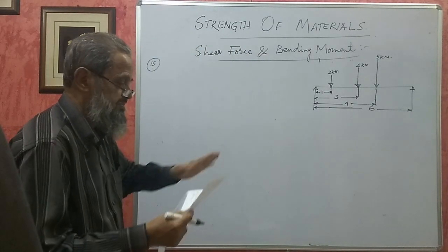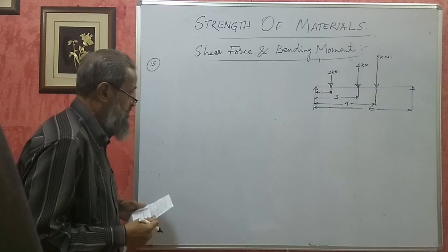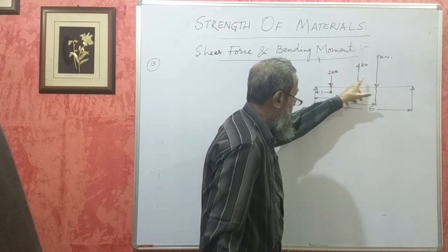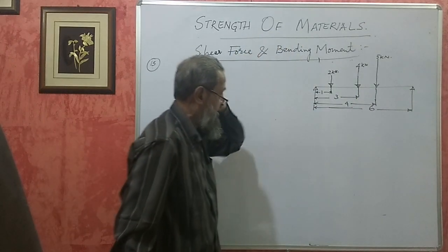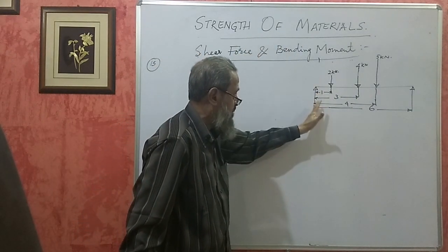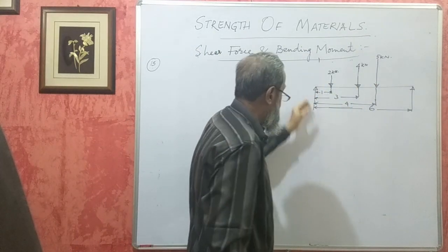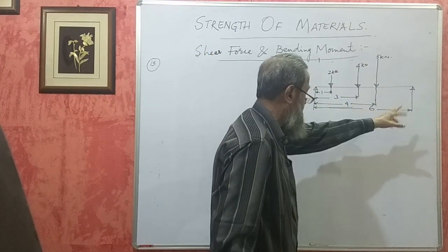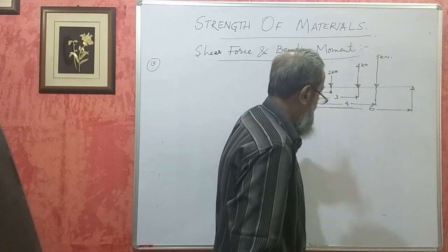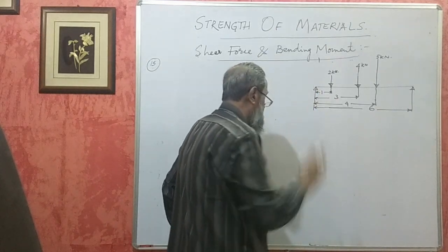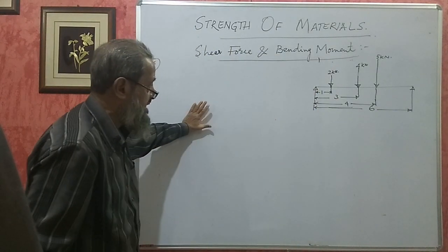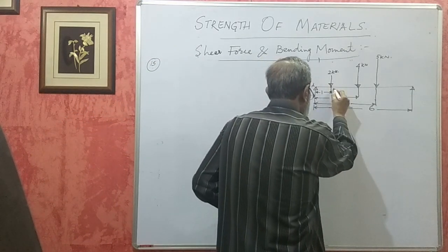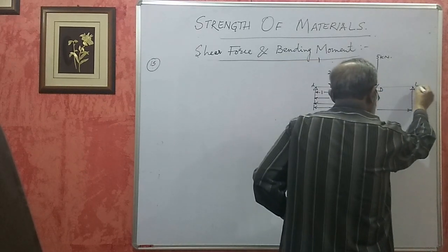You have to read the problem carefully and draw the figure first. On this beam there are 5 forces acting. In a cantilever beam there used to be only one support, so we simply added them. But here there are 2 reactions — 2 unknown forces. We have to find out these unknown reactions. I will call the points A, B, C, D, and E, so the reactions will be called Ra and Re.